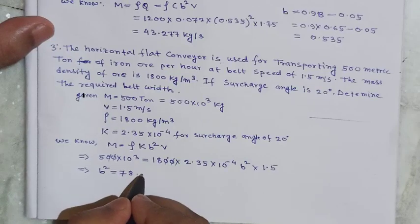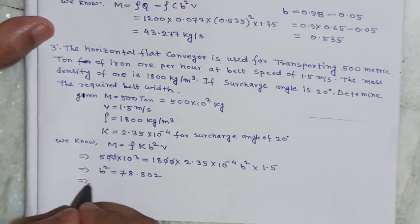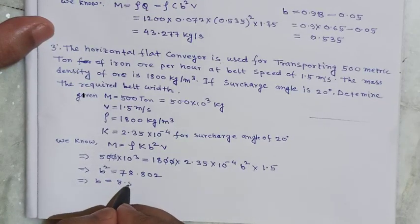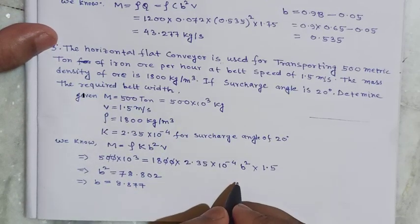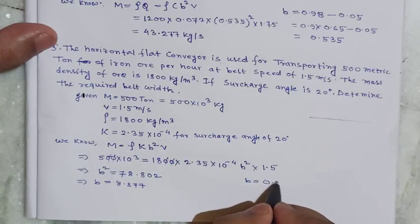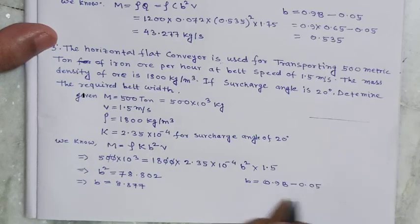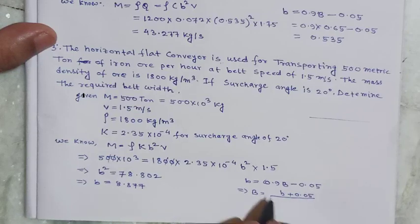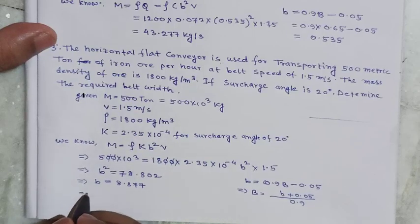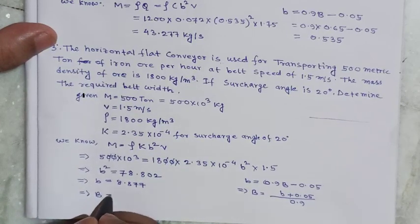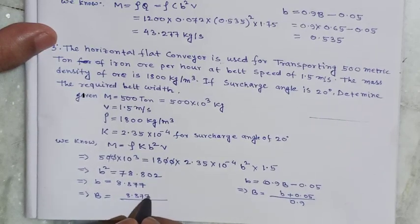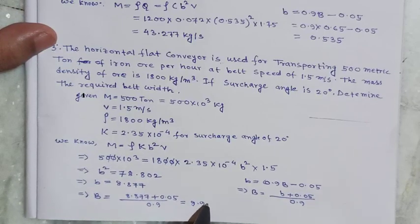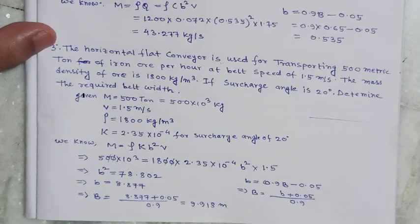Solving, b squared comes out to 0.802, so effective belt width b equals 0.896 meter approximately. We know b equals 0.9 times (B minus 0.05), so total belt width B equals (b plus 0.05) divided by 0.9. Substituting: B equals (0.896 plus 0.05) divided by 0.9, giving B approximately 9.918 meter, which equals 9918 millimeter.